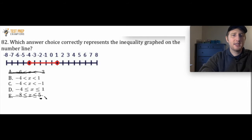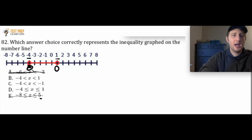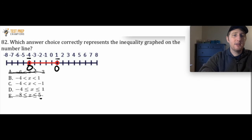The next thing to understand is what do these open circles mean? The open circles tell us that negative 4 and 1 are not going to be included in the range of values. If they were closed circles, then negative 4 and 1 would be included, but they're open circles, so they're not included. We can take D out because D says negative 4 is less than or equal to x — x cannot equal negative 4 because these values are not included in the range.